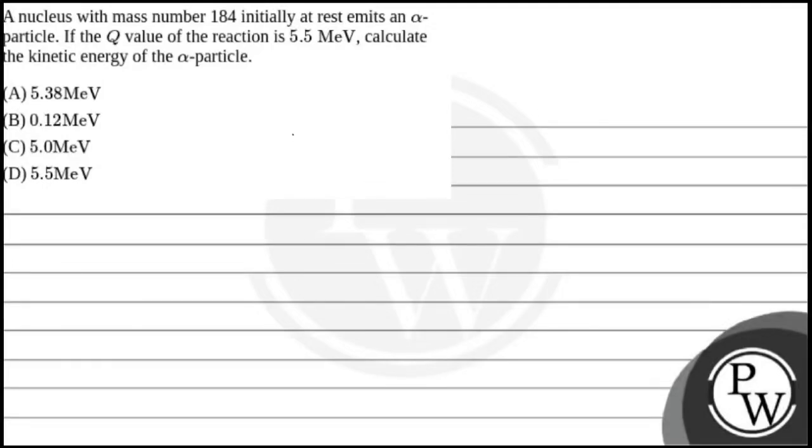Hello, let's read this question. A nucleus with mass number 184 initially at rest emits an alpha particle. If the Q value of the reaction is 5.5 MeV, calculate the kinetic energy of the alpha particle. The options are: A) 5.38 MeV, B) 0.12 MeV, C) 5.0 MeV, and D) 5.5 MeV.